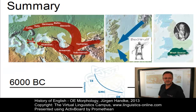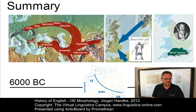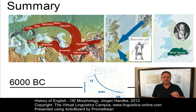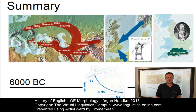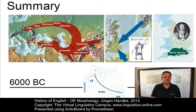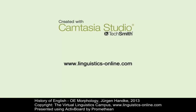Apart from the phonological differences between Old English and later stages of English, the most significant difference between Old English and present-day English was the much higher degree of morphological complexity of Old English. But even though the degree of synthesis of Old English was much higher than that of present-day English, there were already signs of Old English becoming increasingly analytic. These tendencies became more and more apparent through the Middle English period, whose morphology will be the focus of a follow-up e-lecture. Thank you.